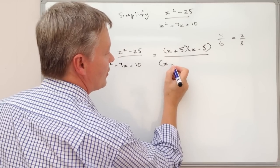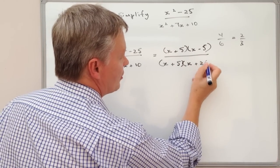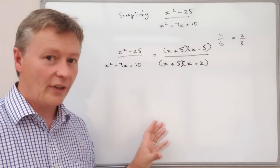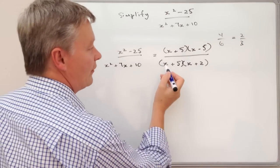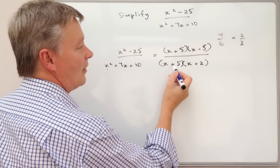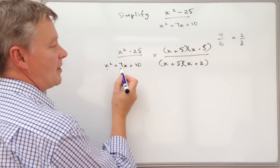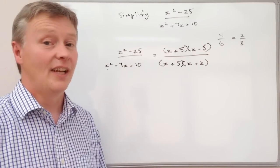And the way that that will factorize will be x plus 5 and x plus 2. And again I can work that backwards if I want to. I'll just do that very briefly: x times x will be x squared so that's that. x plus 2 and plus 5x is plus 7x and then plus 5 times plus 2 is plus 10.